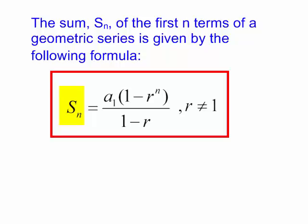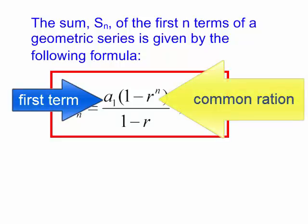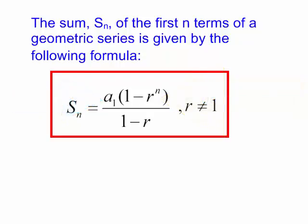S sub n is equal to the first term a sub 1, times 1 minus r — the common ratio — to the nth power, divided by 1 minus r. And of course r cannot equal 1 because that would make the denominator 0.